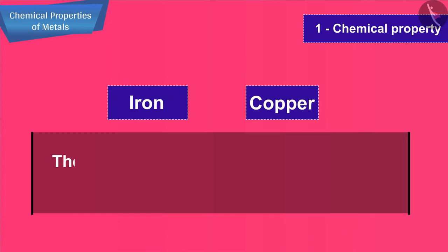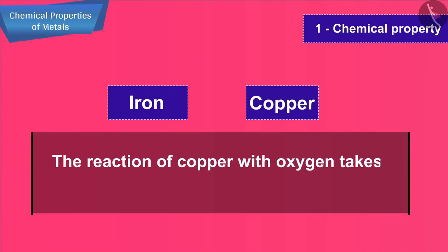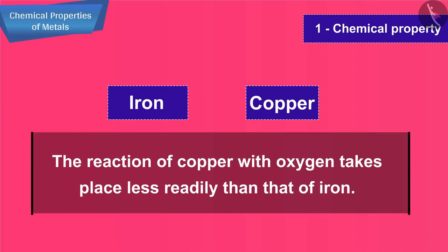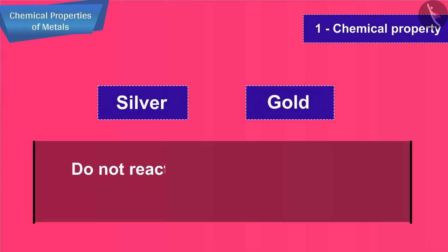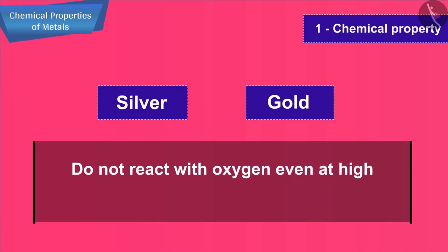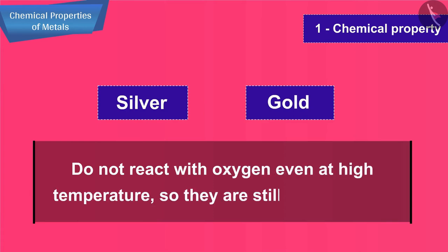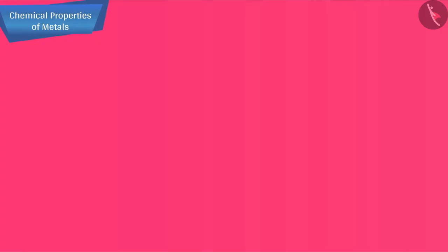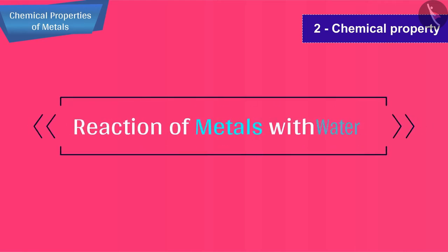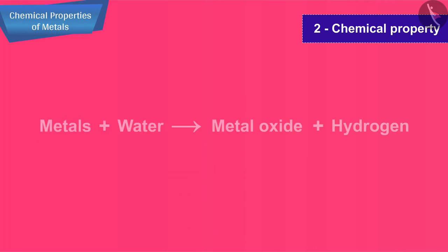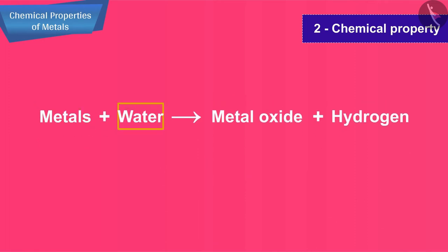Iron and copper metal do not burn in air even on strong heating. The reaction of copper with oxygen takes place less readily than that of iron. Silver and gold metals do not react with oxygen even at high temperature, so they are still less reactive. The next chemical property is the reaction of metals with water.